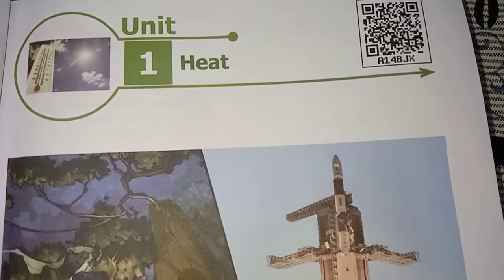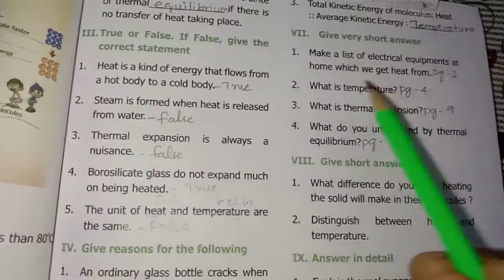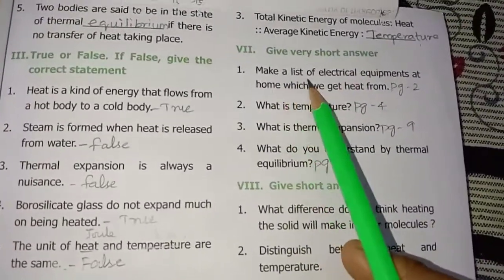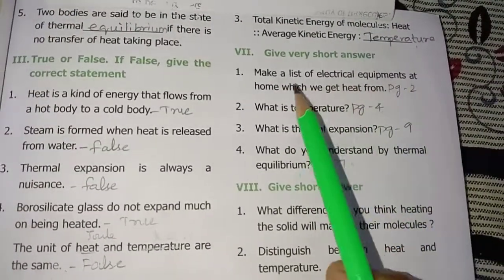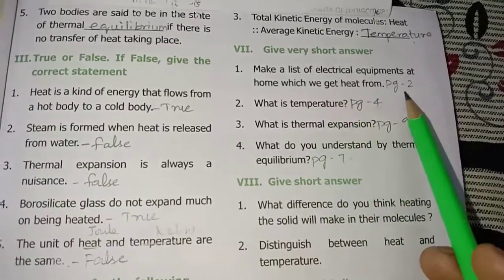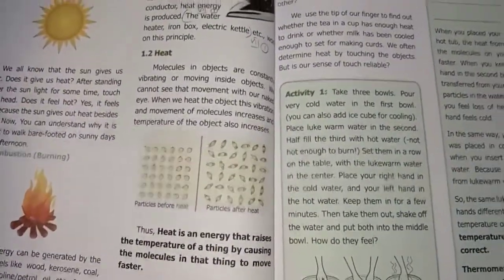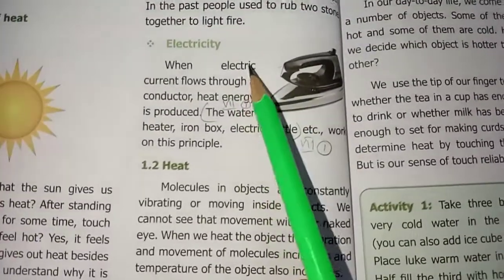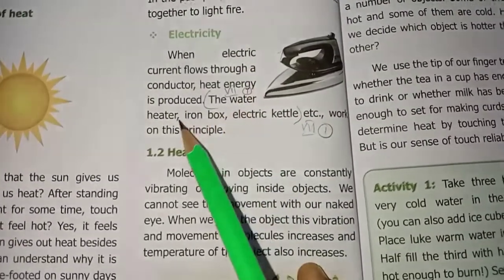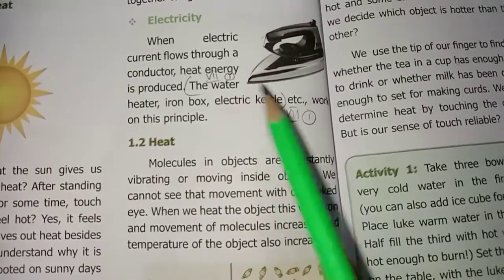Students, sixth standard term two, unit one: Heat. First question - make a list of electrical equipments at home which we get heat from. Page number two, turn to page number two. In the fourth line: the water heater, iron box, electric kettle. That's the first answer.